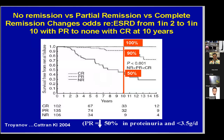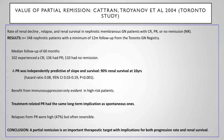In the CATRAN study, patients who achieved complete remission had a 100% renal survival — no one required renal replacement therapy. Those who achieved only partial remission did better than non-remitters. The non-remission group had a 50% chance of needing renal replacement therapy. This clearly demonstrates that both partial and complete remission are critical therapeutic targets with major implications for renal survival.